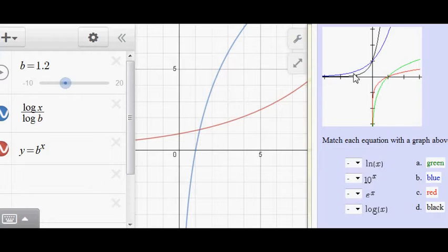So the blue and black graph, since they have the shape of an exponential, must match the y equals e to the x and 10 to the x, because those are the two exponential equations.